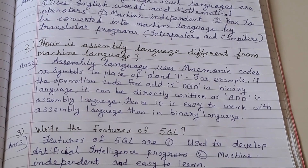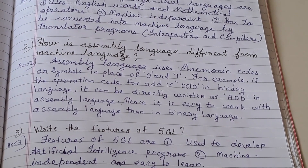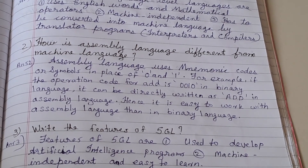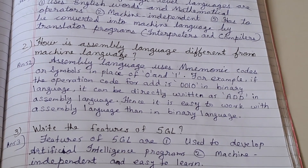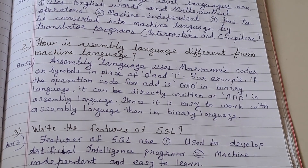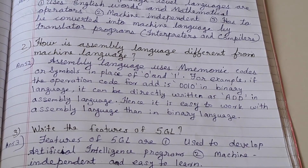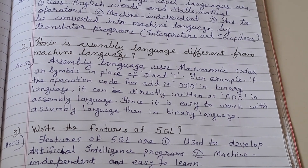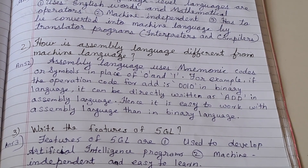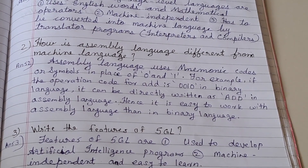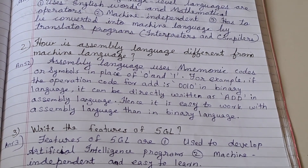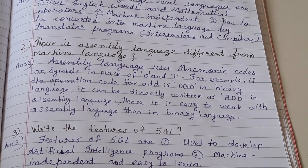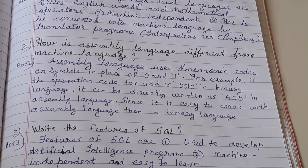Second question: How is assembly language different from machine language? Answer: Assembly language uses mnemonic codes or symbols in place of 0 and 1. For example, if the operation code for add is 0010 in binary language, it can be directly written as ADD in assembly language. Hence, it is easy to work with assembly language than binary language.